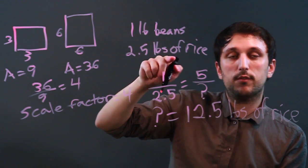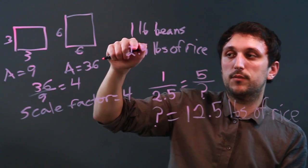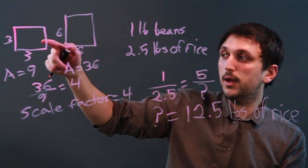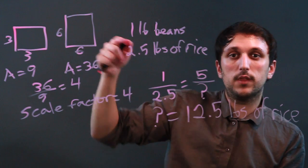Thus, we don't talk about a scale factor from 1 pound of beans to 2.5 pounds of rice. But if we're talking about one type of shape, we can then scale from one to the other.